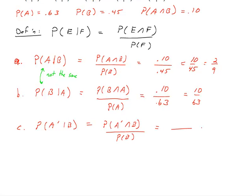When you run across this, it's now an unconditional probability problem. Sometimes it's nice just to go back to Venn diagrams to figure out what that probability is based on the area in the Venn diagram. So I'm going to construct a Venn diagram for this example.